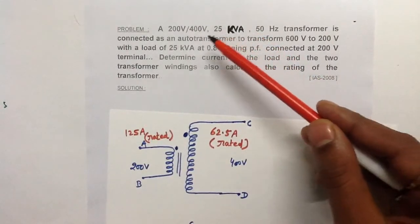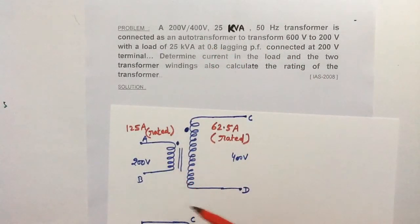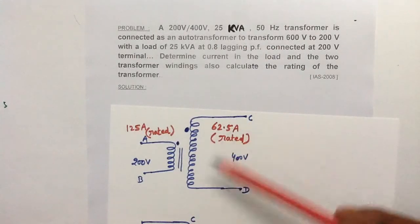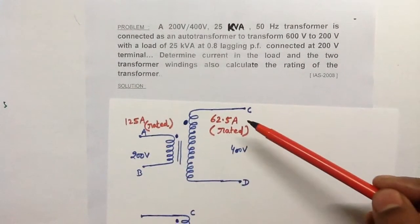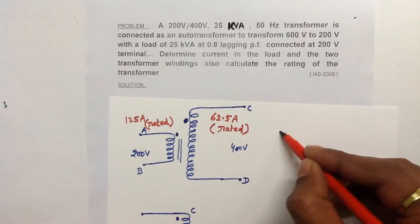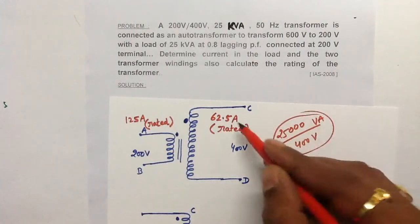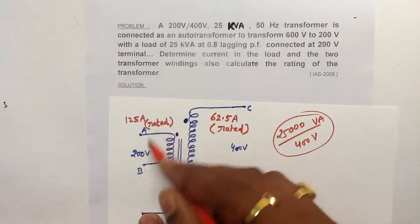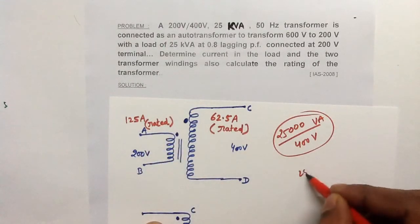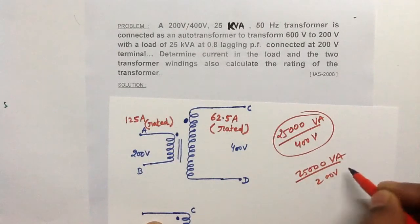The rating of the two-winding transformer is 25 kVA, 200V/400V. Using this rating, we can find the rated current in the HV winding: 25,000 VA divided by 400 V gives 62.5 amperes. The rated current in the LV winding is 25,000 VA divided by 200 V, which gives 125 amperes.